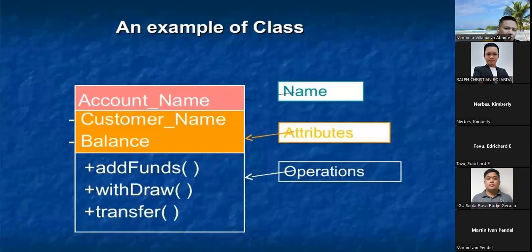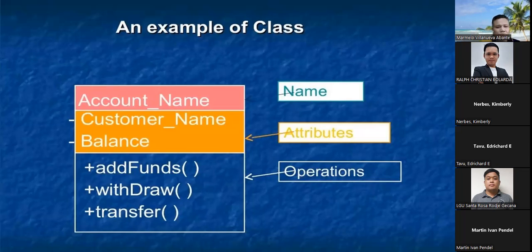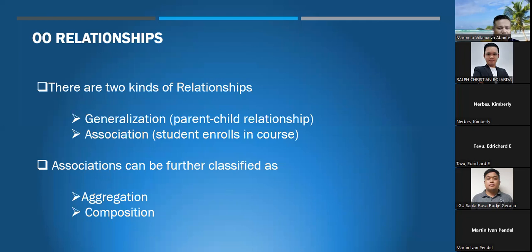The three compartments show: the name — for example, 'Account'; the attributes — such as customer name; and the operations — such as deposit funds, withdraw, or transfer funds. Different operations can be defined in the operations compartment.